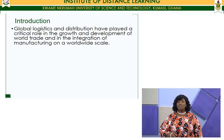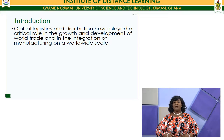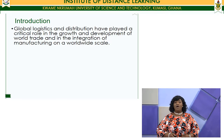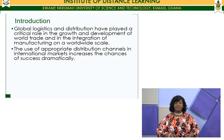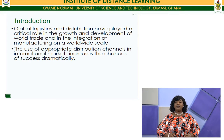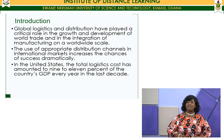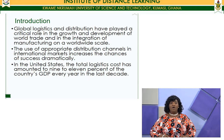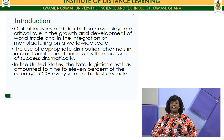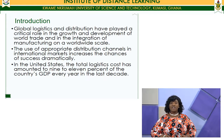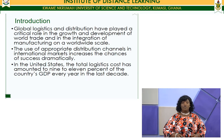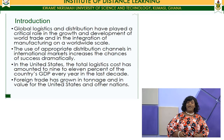Global logistics and distribution have played a key role in the growth and development of world trade and in the integration of manufacturing on a worldwide scale. The use of appropriate distribution channels in international markets increases the chances of success dramatically. In the United States, for example, total logistics cost has amounted to 9 to 11 percent of the country's GDP every year in the last decade, showing that logistics contributes significantly to GDP, especially on the global front. Foreign trade has grown in tonnage and in value for the United States and other nations as well.